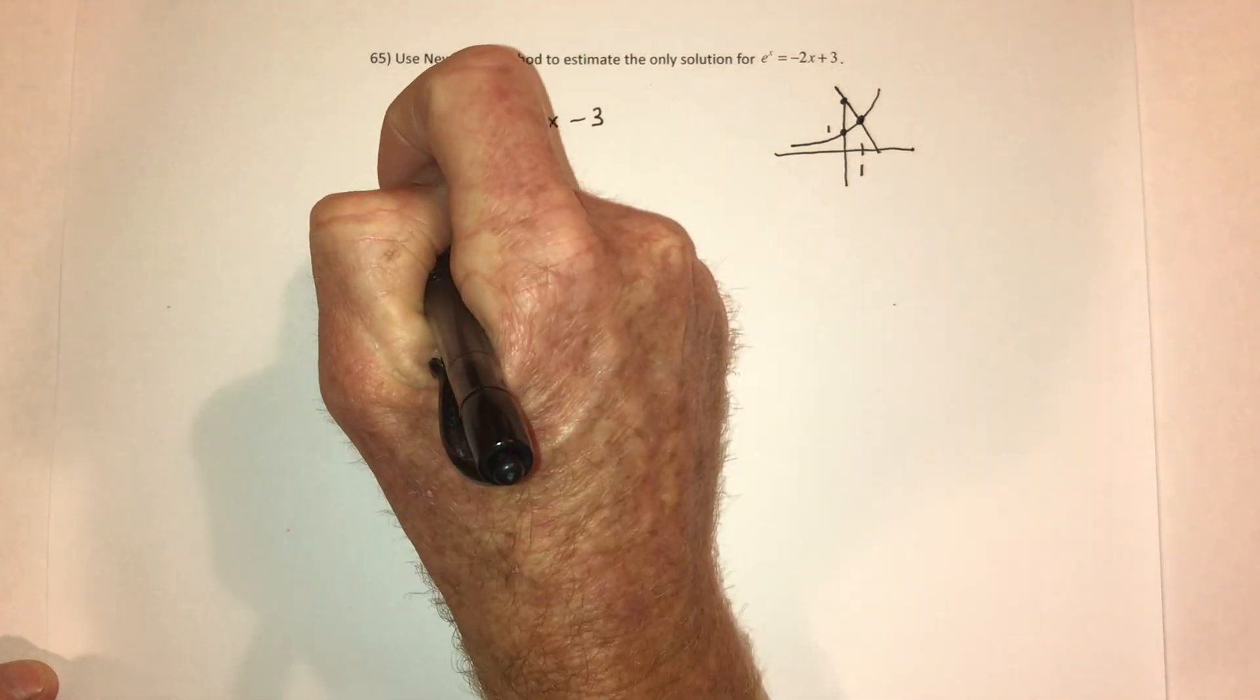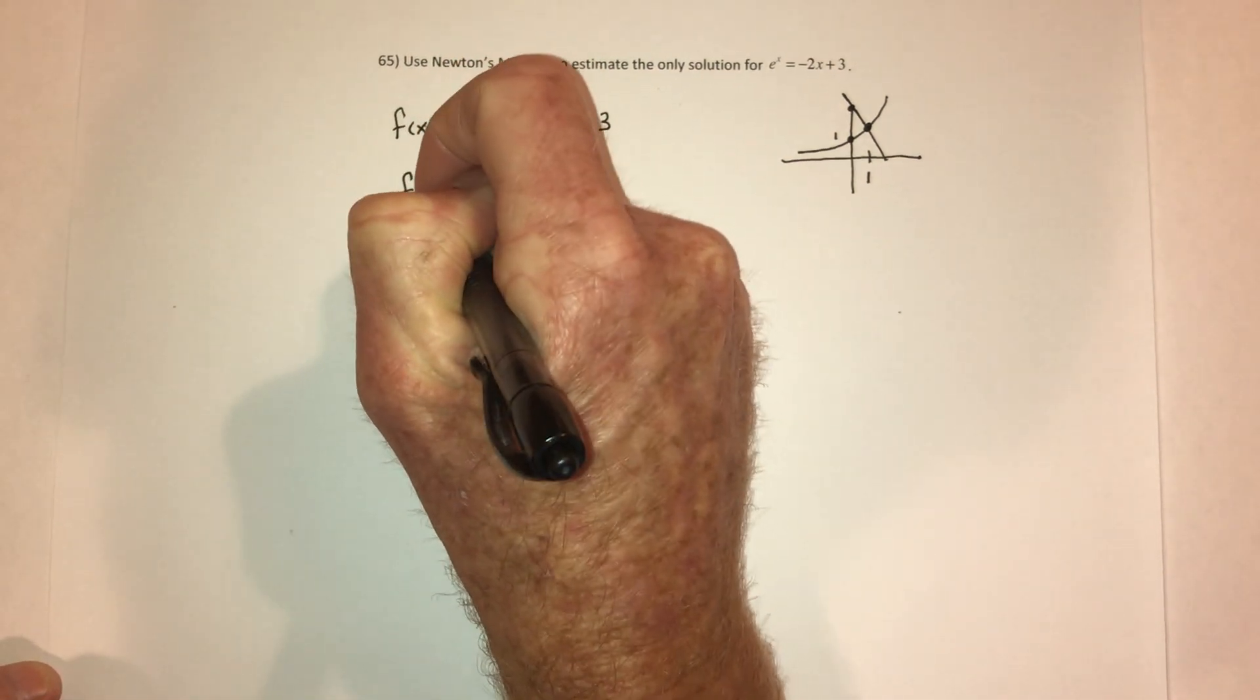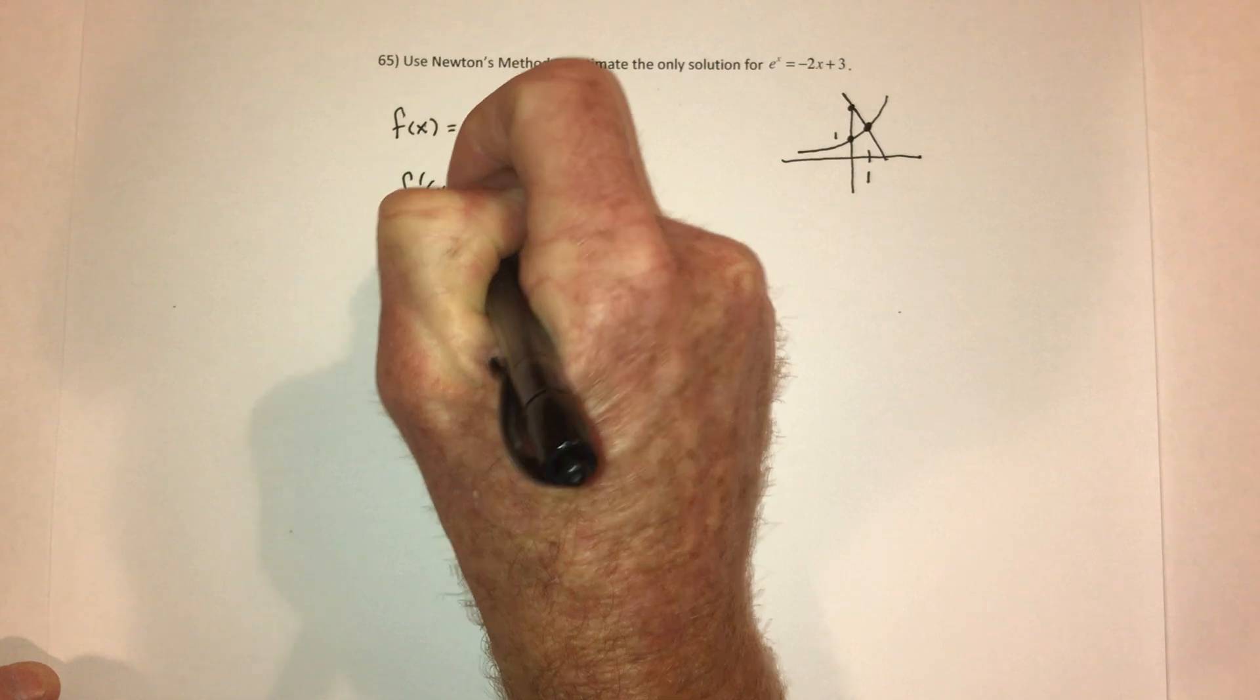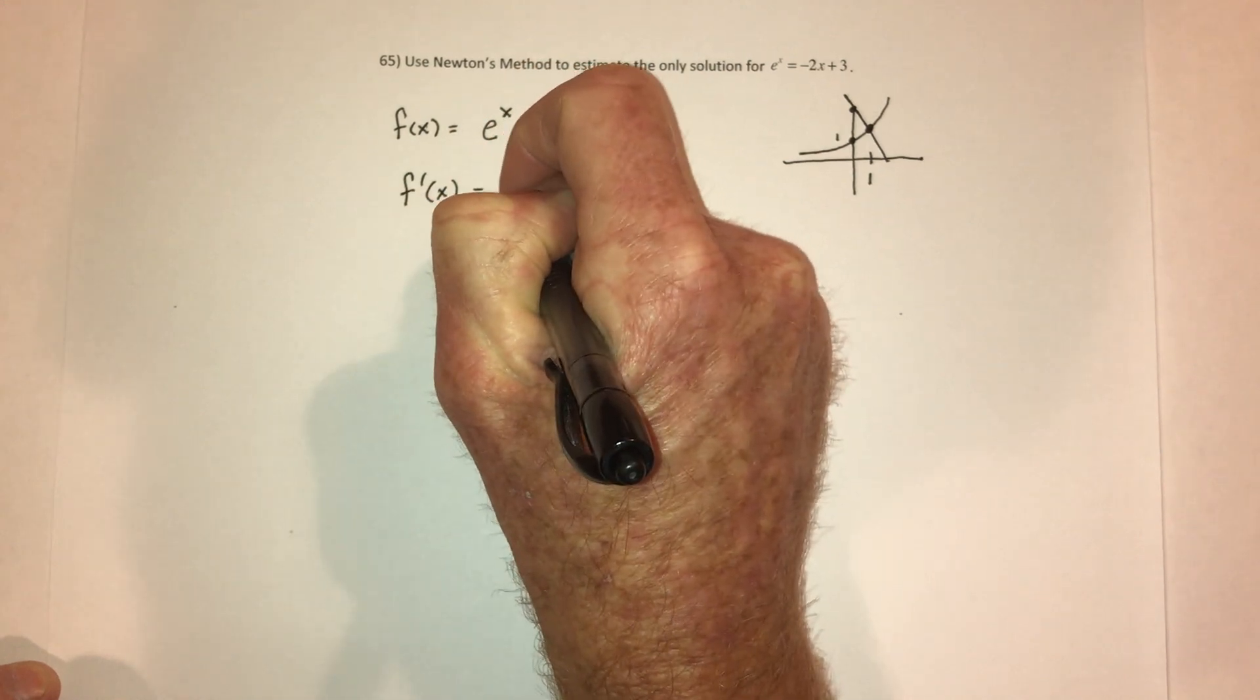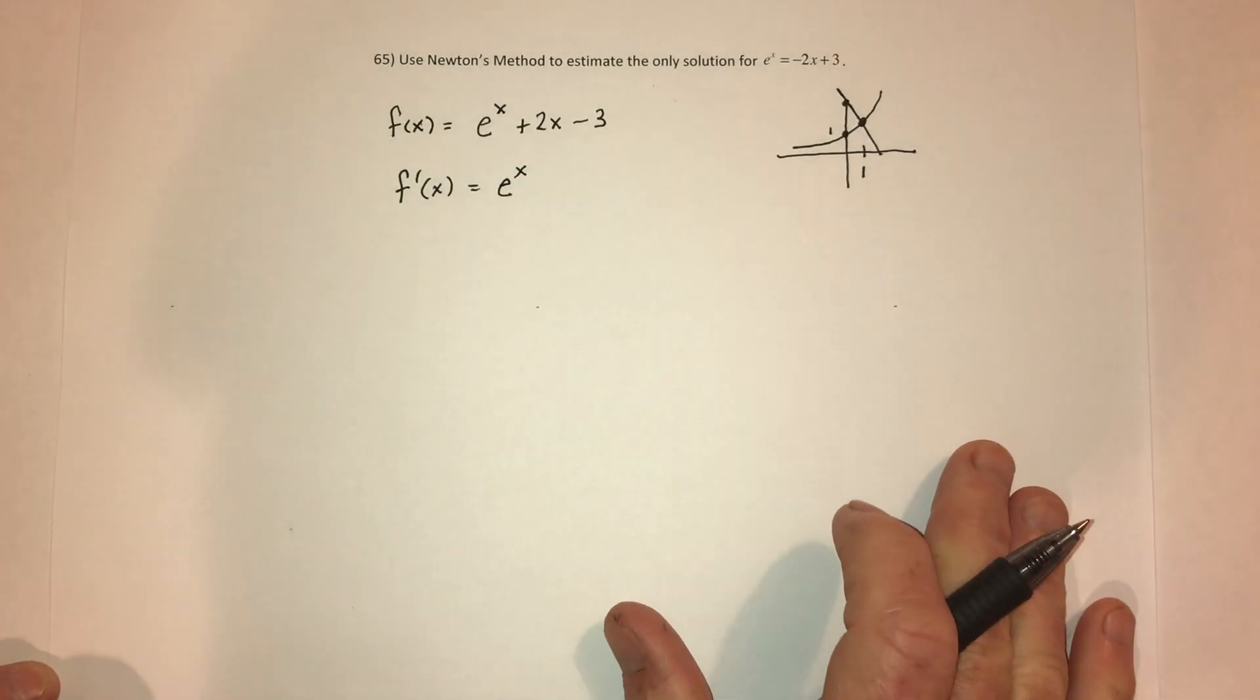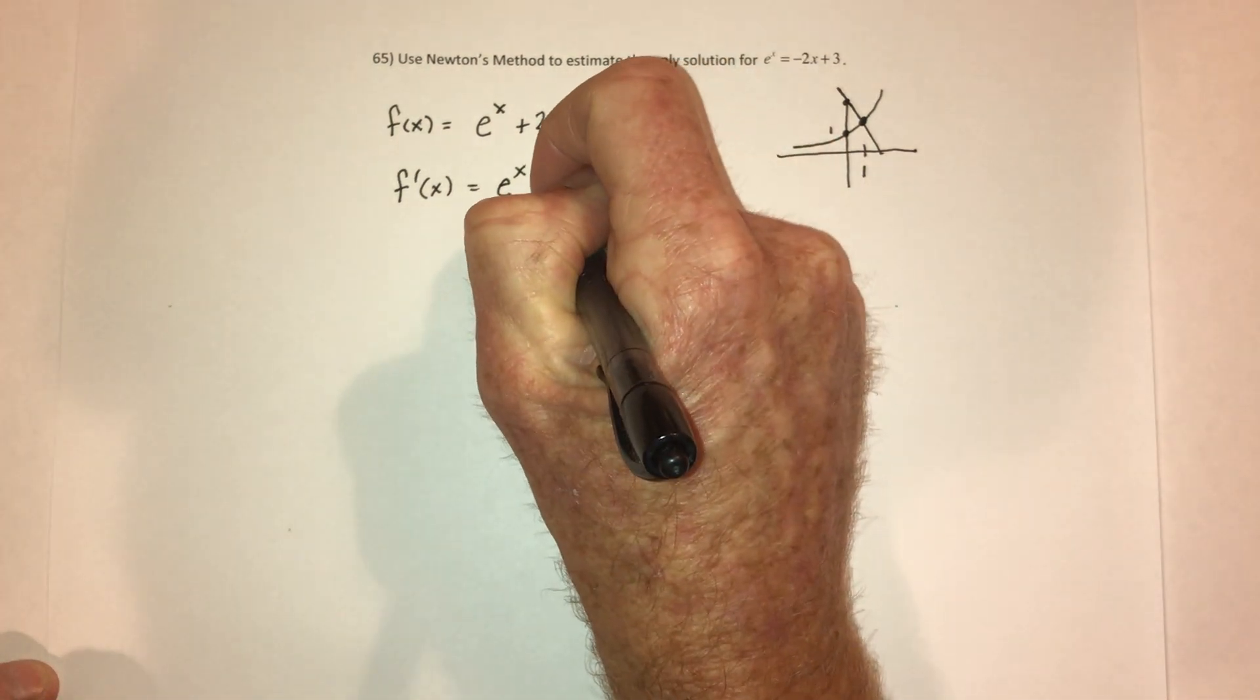The next thing to do is take the derivative. So the derivative of e to the x is e to the x, and the derivative of 2x is just 2.